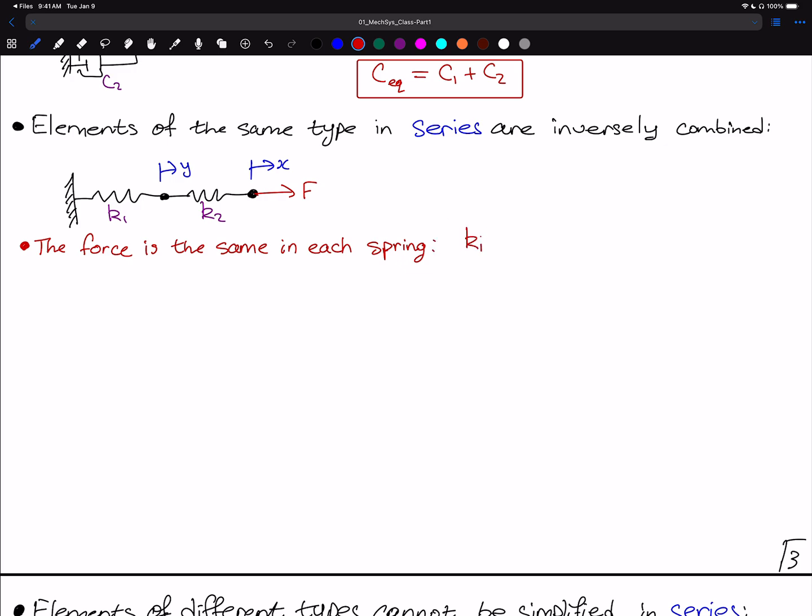That means that K1 times Y is going to be equal to F. Because in this case, we wouldn't compute the relative displacement. Because Z is the ground, this is always 0. So if we compute the relative displacement for the spring K1, we'll find that it would be Y minus Z, which is 0, so K times Y. And then for the second spring, we have to look at the relative displacement, and that's going to be that K2 times X minus Y will be equal to F.